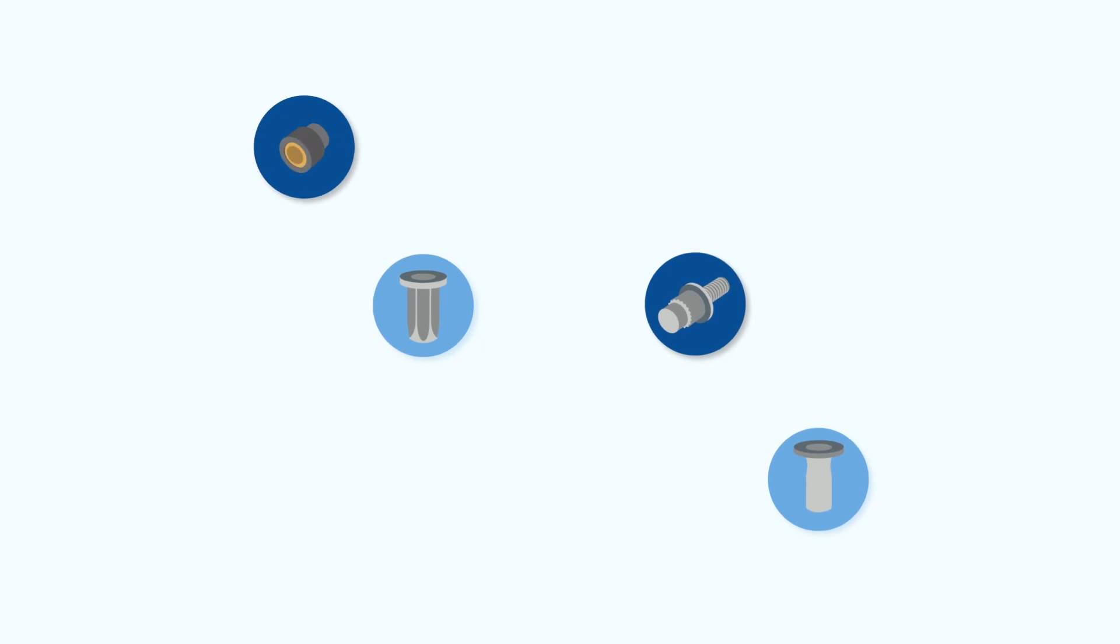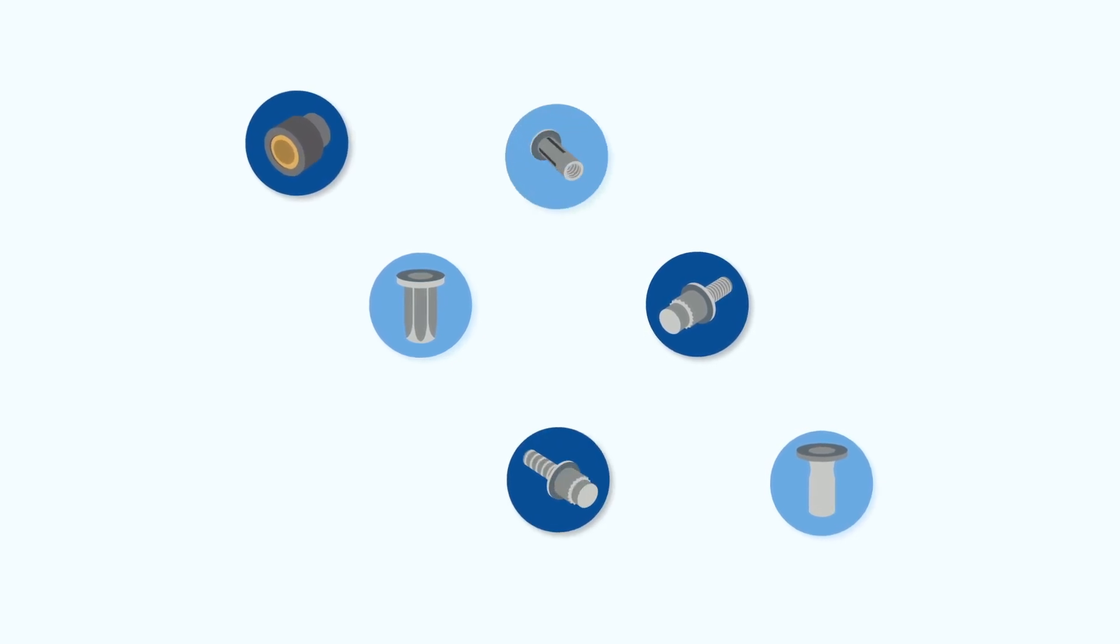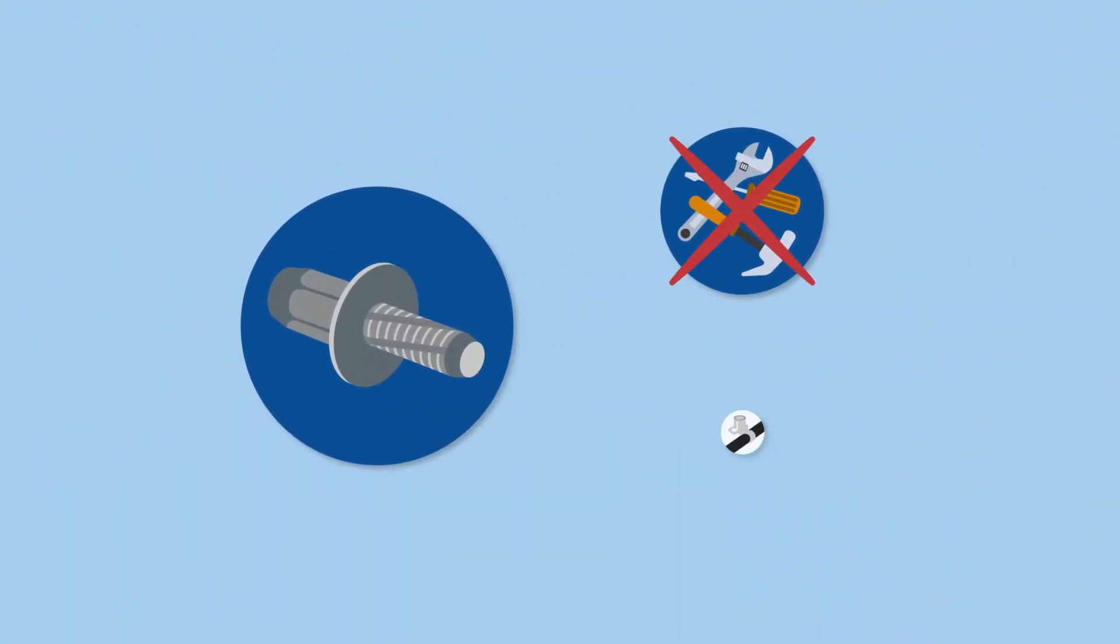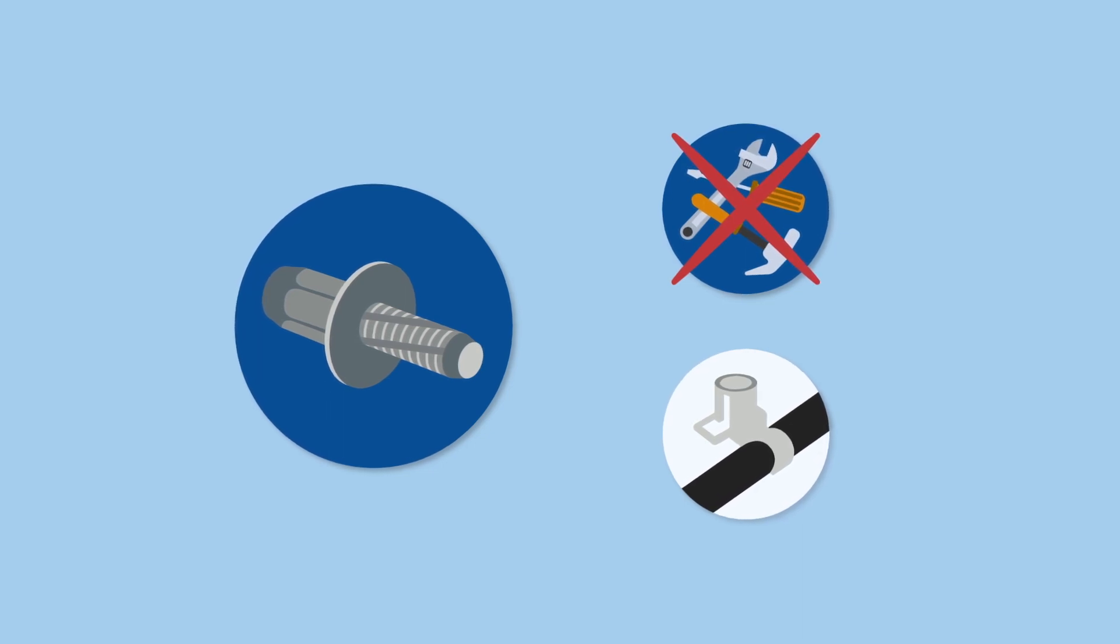These can integrate additional functions such as a spacer, seal, or guide to make installation easier. In their furtree version, blind rivet studs can be used to secure clips without the need for tools.